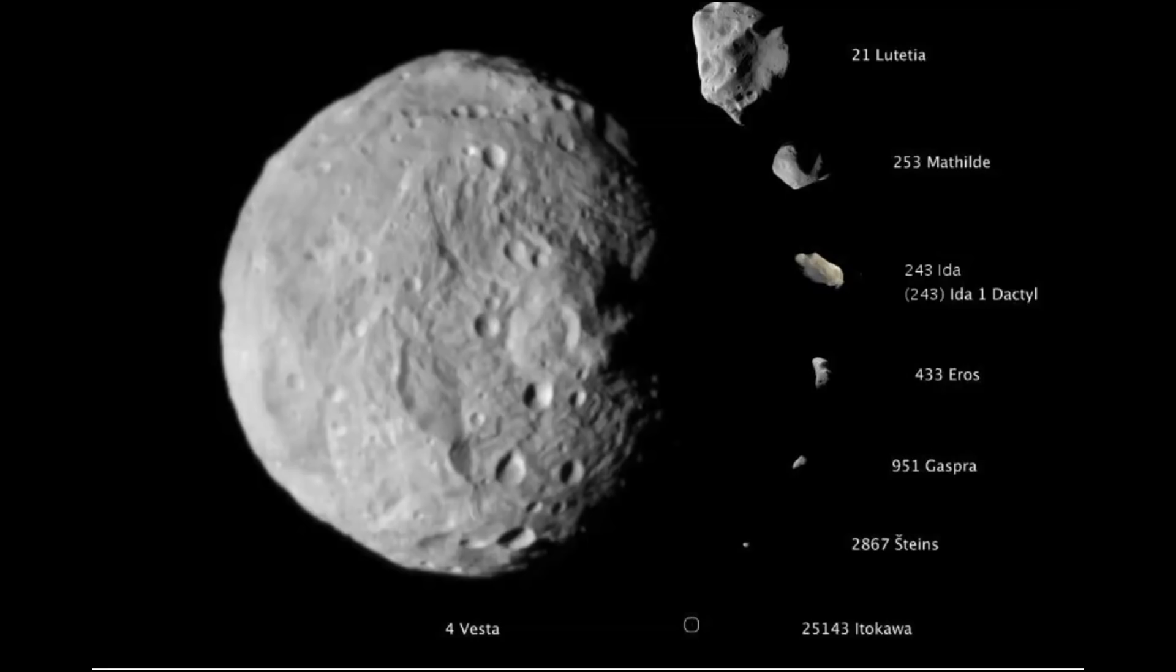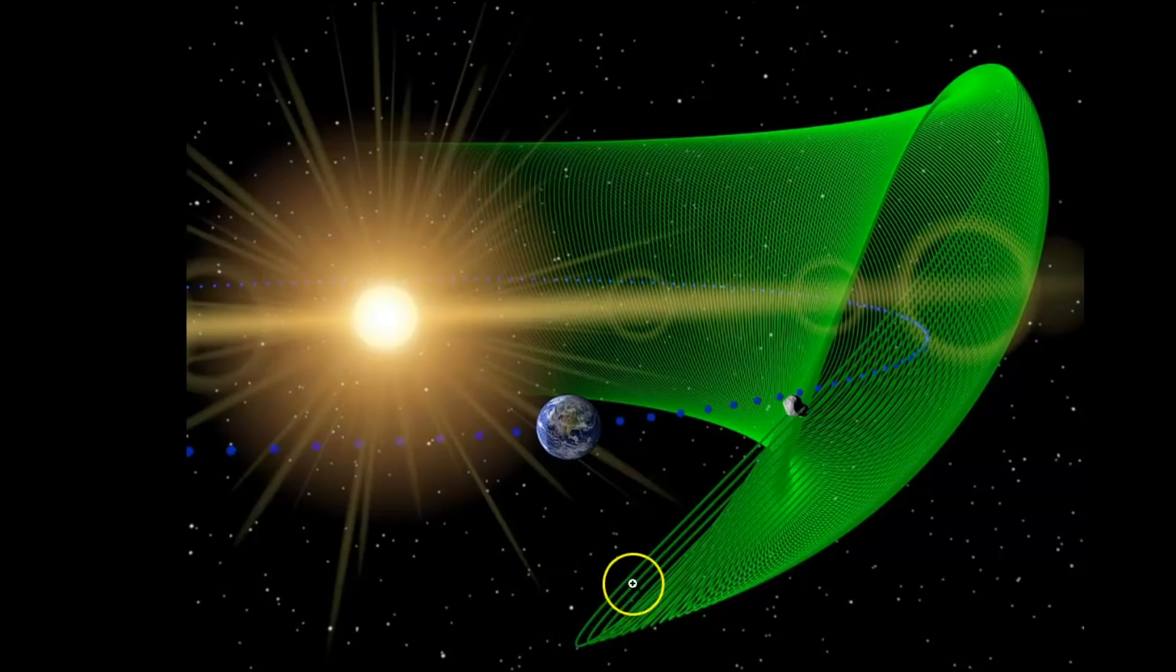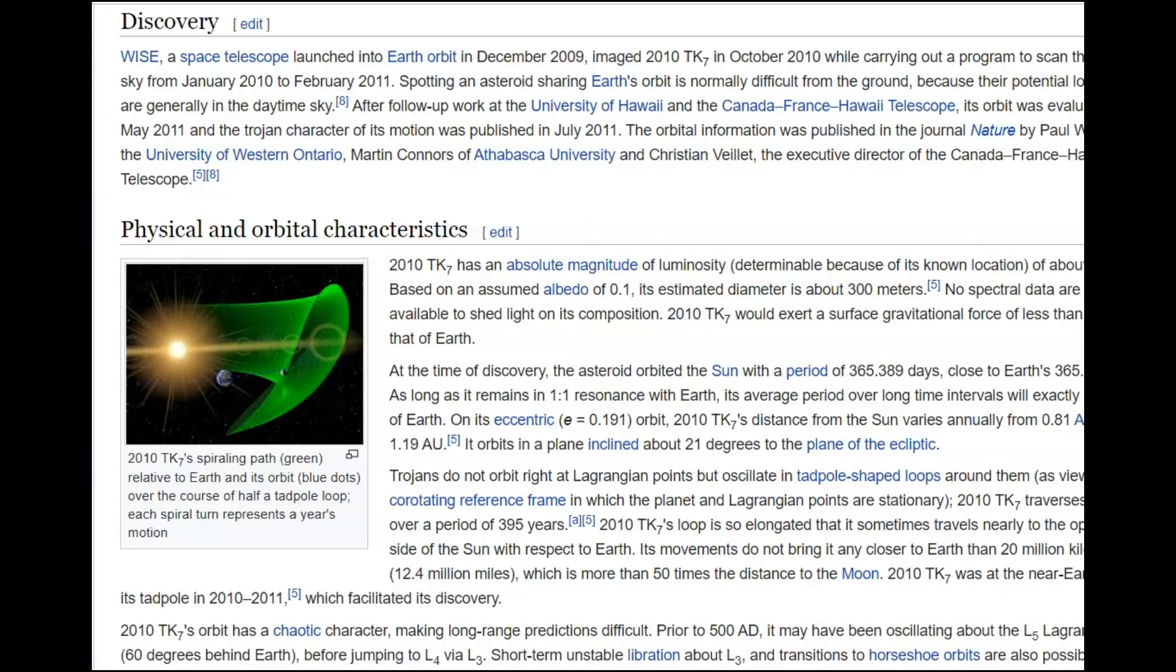But something else I found that was interesting that could affect it is asteroid 2010 TK7. It is what is known as an Earth Trojan. Here we got the diagram of its orbit. It's an asteroid that actually was discovered and is the first Trojan asteroid that follows the Earth. I believe it wasn't acknowledged until 2017.